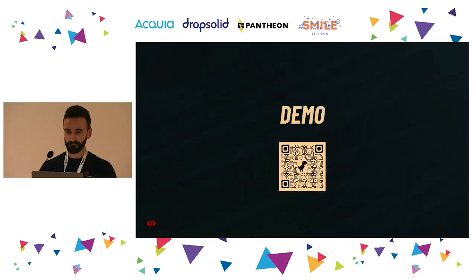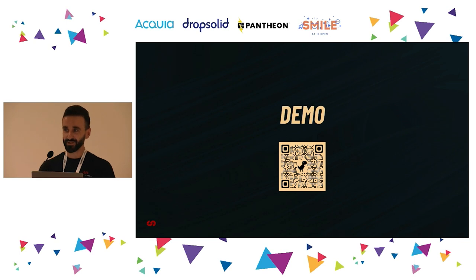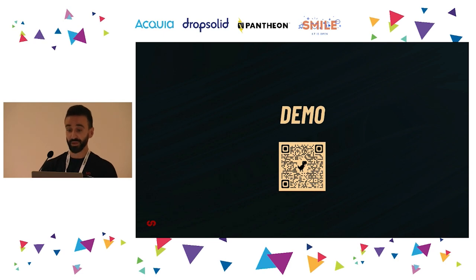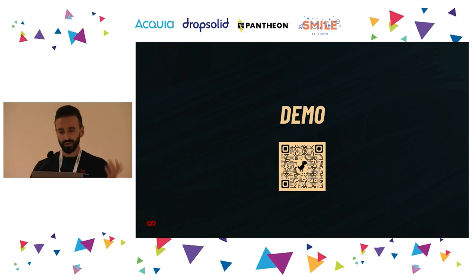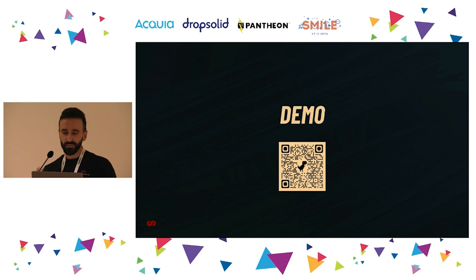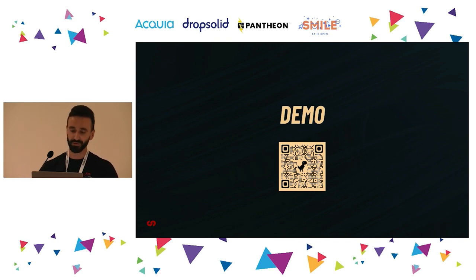Demo time. We are going to see mainly three things: how to sign a Drupal container image with Sigstore's cosign, how to generate and attach an SBOM to the container in the registry. In the second part, I will show the new Drupal module bringing all these technologies together and making them easily accessible. To demonstrate, I will deploy the container on a local Kubernetes cluster running security policies that only allow containers with signatures and SBOMs attached. You can use the QR code to access the GitHub repo with all the code to replicate this demo.